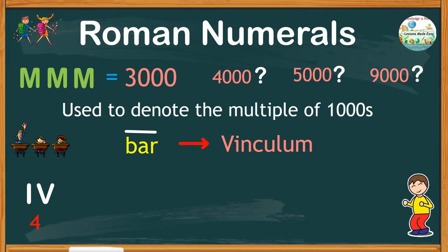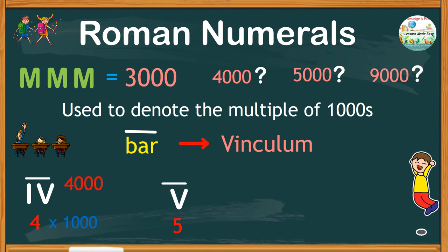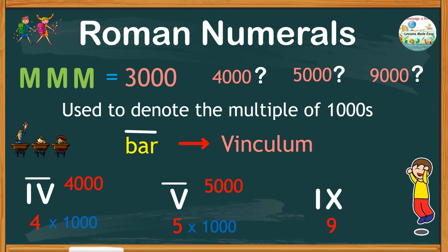For example, IV is only 4. But if you put a bar or a vinculum, it means multiply by 1000. So, it is now 4000. V is 5. With a bar, it is multiplied by 1000, making it 5000. So, if we have 9, adding a vinculum or a bar over 9, it is now multiplied by 1000, making it 9000. So, you could write any number as you wish with multiple of thousands just by using a bar or vinculum.